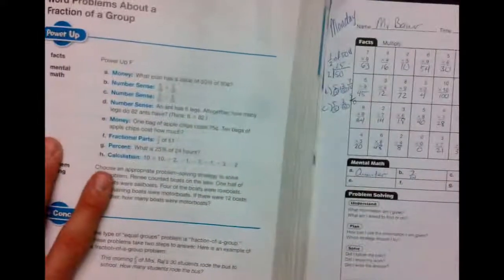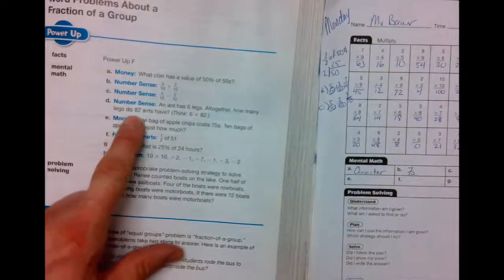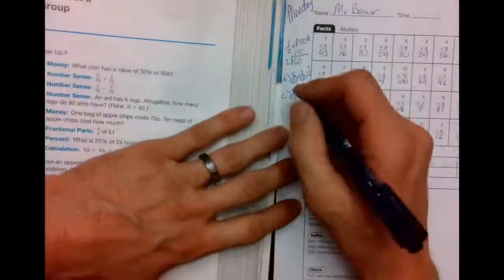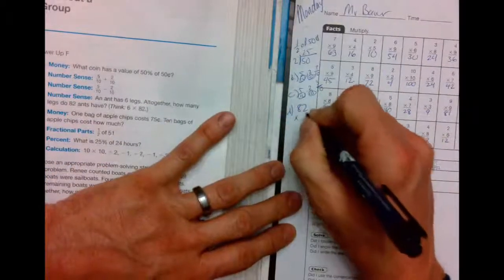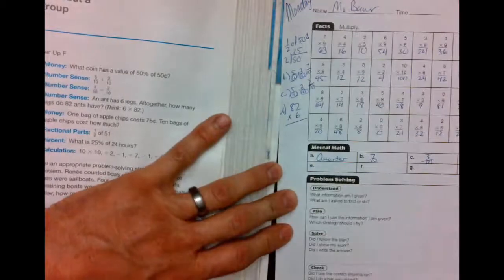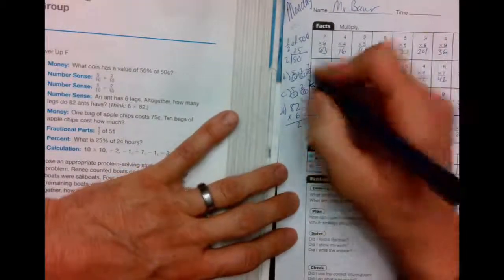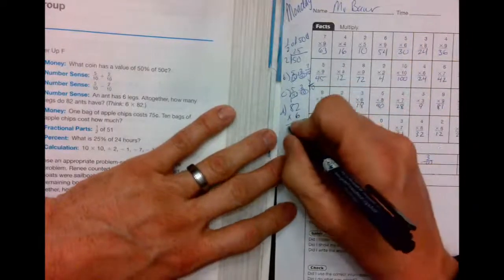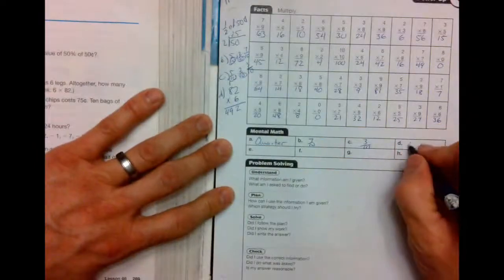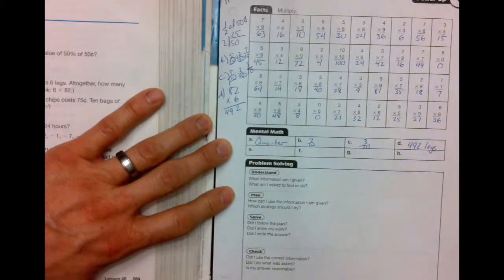D says, an ant has 6 legs altogether. How many legs do 82 ants have? I hope they're not in the house. 82 ants times 6 legs per ant. 6 times 2 is 12, 2 down, 1 up. 6 times 8 is 48 plus 1 more is 49. 492 what? Legs.